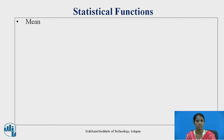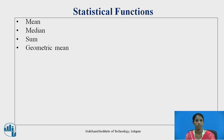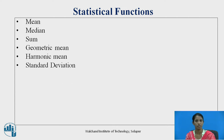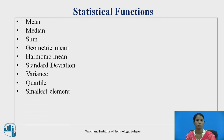The first statistical function is mean — finding the average of all the entries specified in a vector. Second is median. Then sum, geometric mean of a vector, harmonic mean of a vector, standard deviation of a vector, variance of a vector, quartile of a vector, smallest element, and largest element specified in a vector.